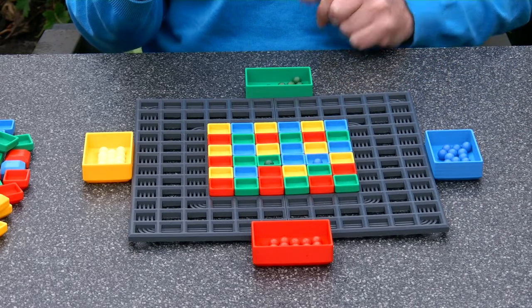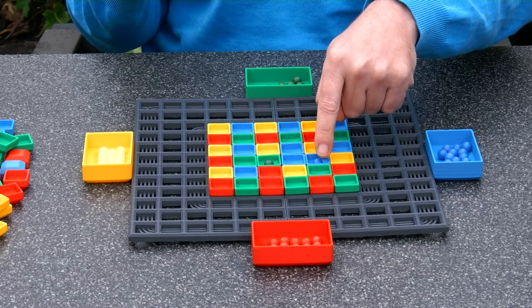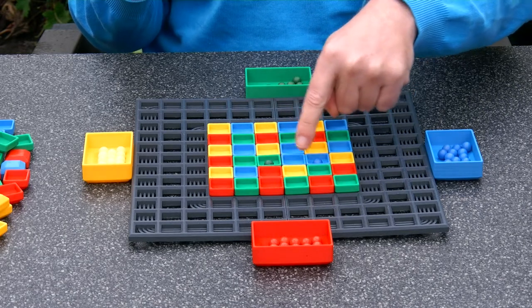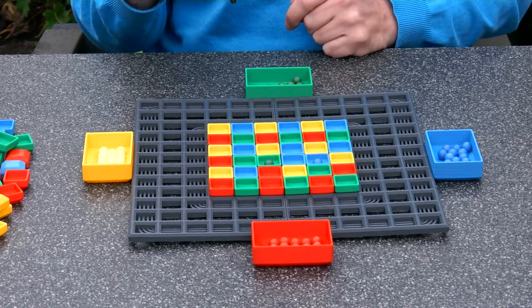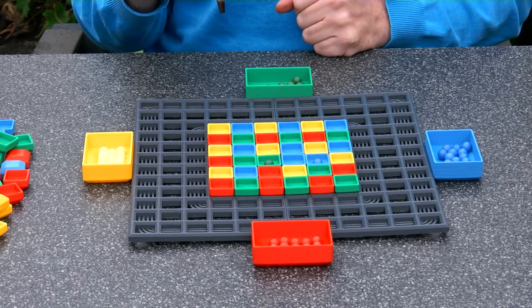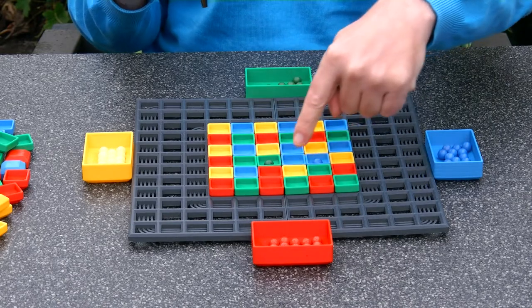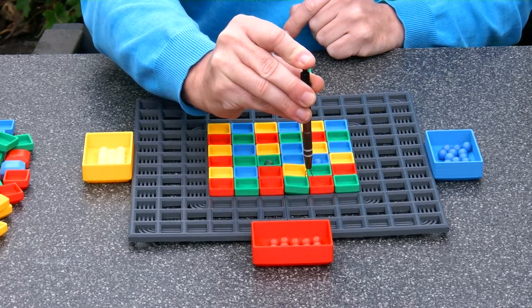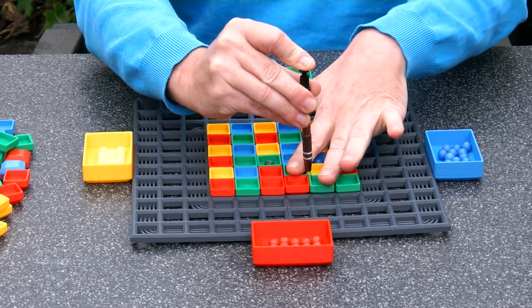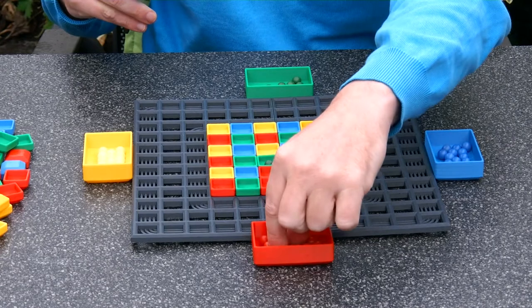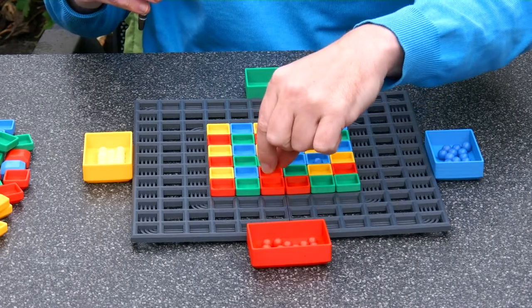And at this moment the blue player is ahead because the blue player has three connected blue colors, whereas green has only two connected. So next move is the red player. And maybe the red player wants to make this field. So the red player makes this move. Adds a ball here.